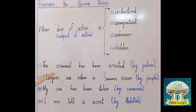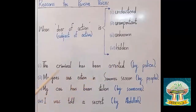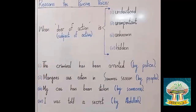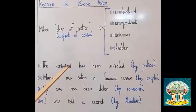Example number one: 'The criminal has been arrested by police.' The active sentence is: 'Police have arrested the criminal.' It is understood that police always arrest criminals, so we do not need to use the doer of the action in this sentence. Since the subject 'police' is understood, we make passive voice: 'The criminal has been arrested.' The listener will understand on his own.